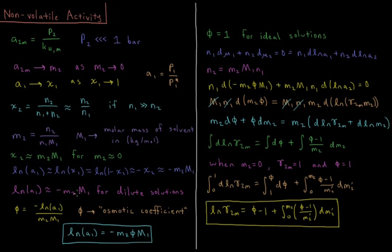Now we define a new quantity called the osmotic coefficient φ, equal to the negative natural log of the activity of the solvent divided by the molality of the solute times the molar mass of the solvent. Rearranging, ln(a₁) = −m₂ φ M₁. For an ideal solution, this works out such that φ equals 1, because ln(a₁) should equal −m₂M₁. So the osmotic coefficient equals 1 for ideal solutions.